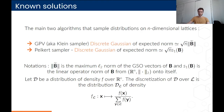The discrete Gaussian distribution is defined as the discretization of the usual Gaussian distribution. If you have a distribution D of density F over R^n, the discretization of D over L is defined as follows: its density is the restriction of F normalized on the lattice.